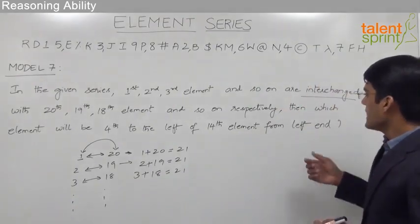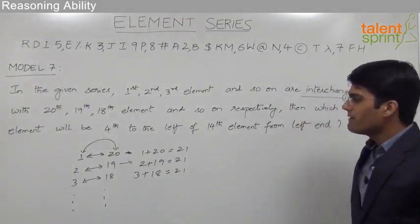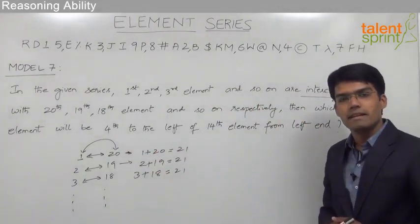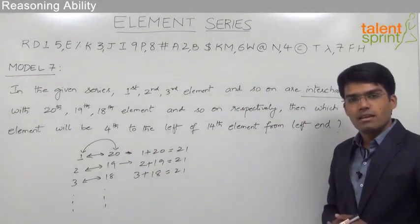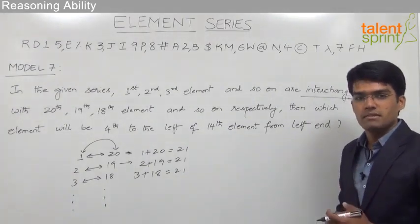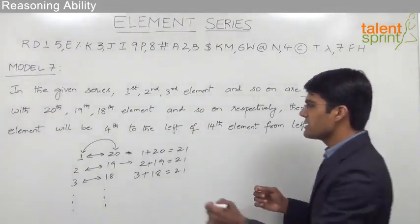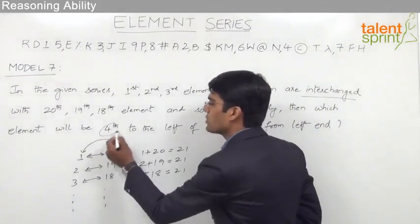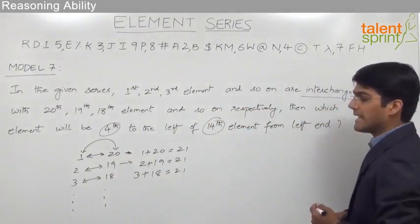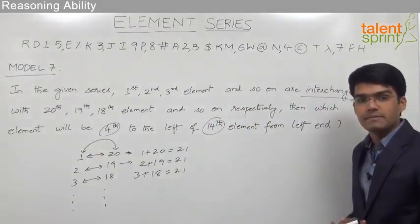Now looking at the second part of the question: which element will be 4th to the left of the 14th element from the left end? We know that whenever there is a left-and-left combination, the 2 positions are subtracted. The difference of 14th and 4th is 10, so the answer should initially be the 10th position from the left end.